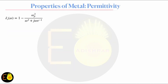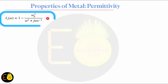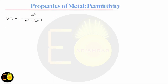A dielectric material is modeled by Lorentz, known as the Lorentz oscillator model. A very special case of the Lorentz oscillator model is the Drude model, which is applicable for metals. The dielectric constant for a metal can be represented as shown, and clearly you can see that the dielectric constant for a metal is complex in nature — we can write it in terms of a real part and an imaginary part.